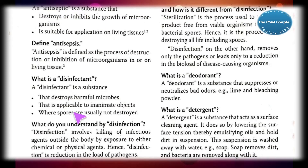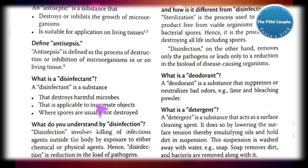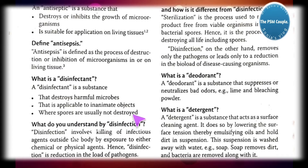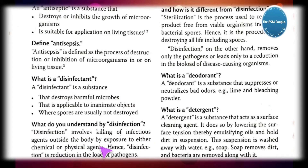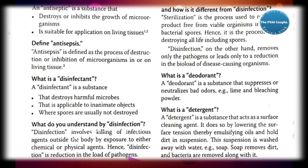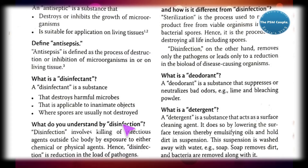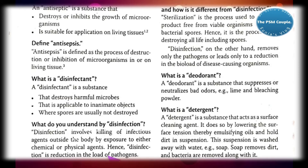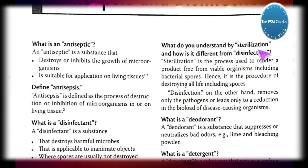What is a disinfectant and what is disinfection? A disinfectant is a substance — it destroys harmful microbes, it is applicable to inanimate objects, and spores are usually not destroyed. Disinfection involves killing of infectious agents outside the body by exposure to either chemical or physical agents. Hence disinfection is a reduction in the load of pathogens, killing infectious agents outside the body.